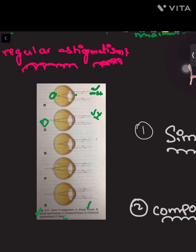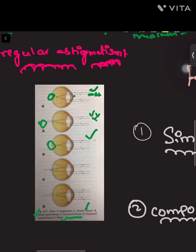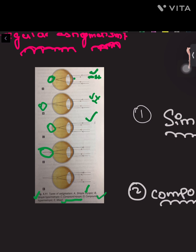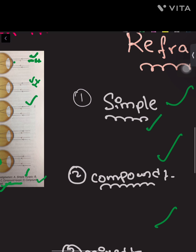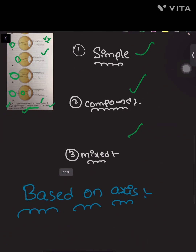In compound astigmatism, there is no formation of a proper image as in a normal eye. In compound myopic astigmatism, both rays are in front of the retina, forming a distorted image at different locations. If both are behind the retina, it is compound hypermetropic. If one component is myopic and another is hypermetropic, it is called mixed astigmatism.